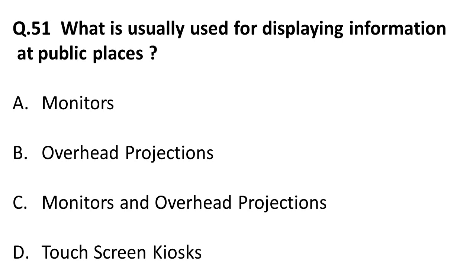Next question: what is usually used for displaying information at public places? Monitors are individual like a computer screen. Overhead projectors are for presentations and office use. Touch screen kiosks are used for displaying information at public places. Remember: touch screen kiosks are used at public places.